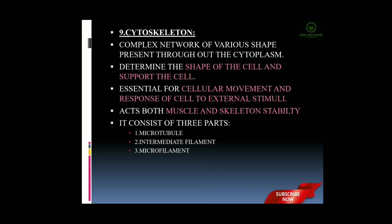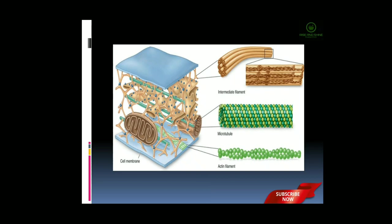The microfilament is also known as an actin subunit. Actin is a protein molecule consisting of long and fine thread-like structures made up of actin or myosin. Actin is more abundant in its structure, so it is also known as the actin subunit. In the diagram shown, the parts of the cytoskeleton are: the intermediate filament which is rope-like, the microtubule which is bundle-like, and the actin filament which is thread-like in structure.